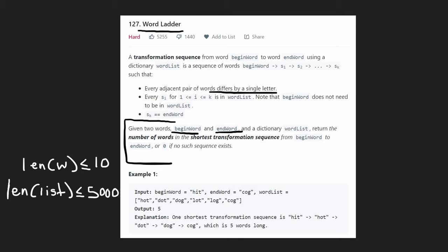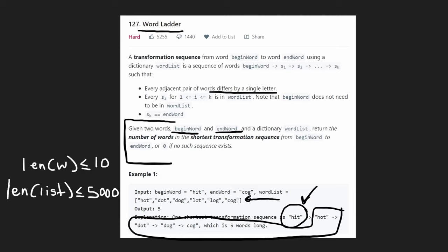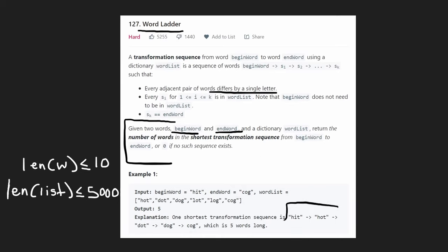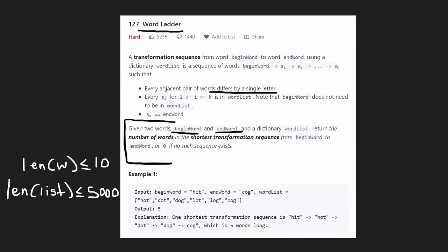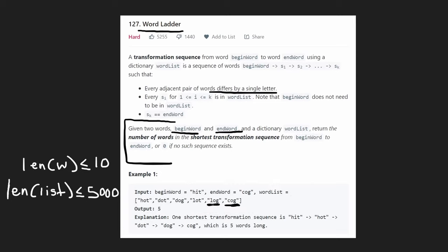For example, in this example we can see that there's a sequence from the starting word 'hit' — notice how the beginning word doesn't have to be a part of our list, but every other word in the sequence does, including the end word 'cog'. The shortest sequence is of length five because it has five different words in it. Conveniently, every single word — including the begin, end word, and every word in the list — is guaranteed to be the exact same length. In this case, every word has three characters.